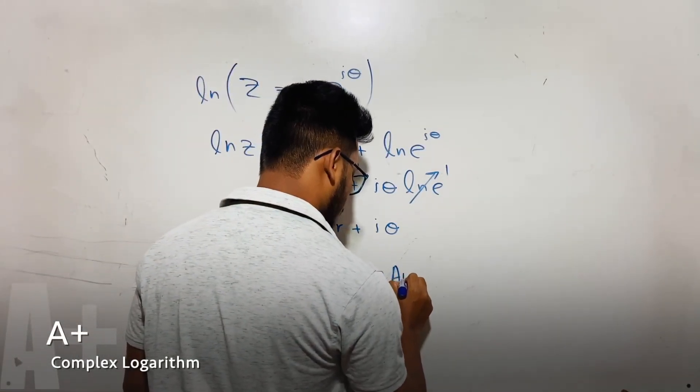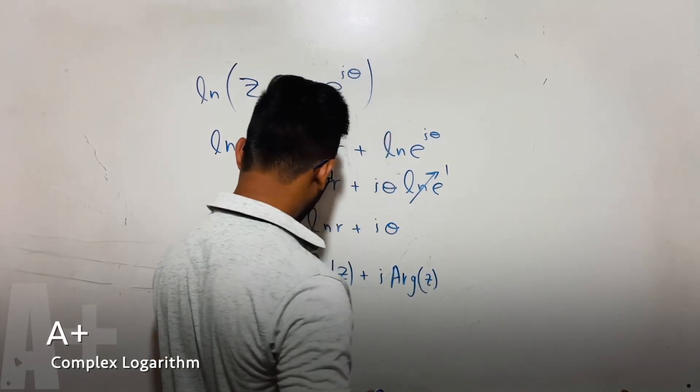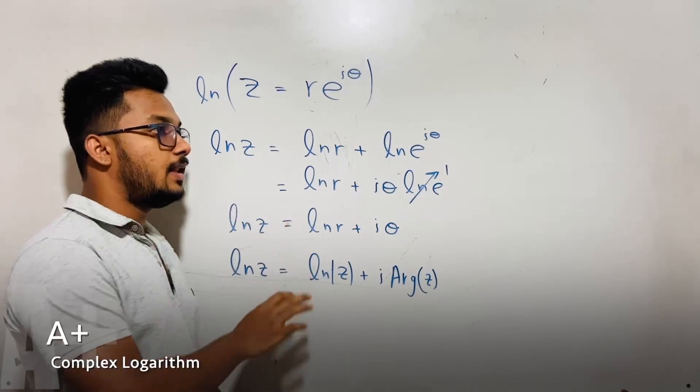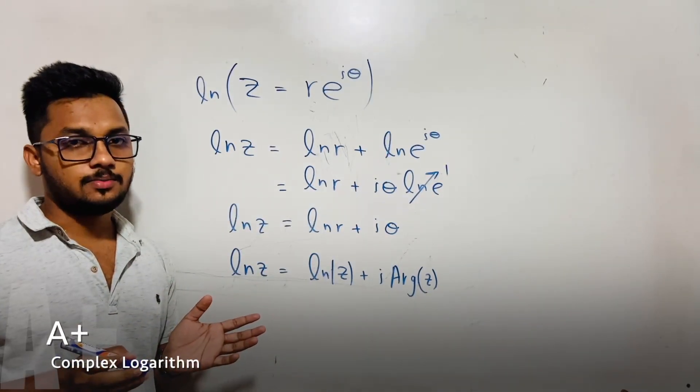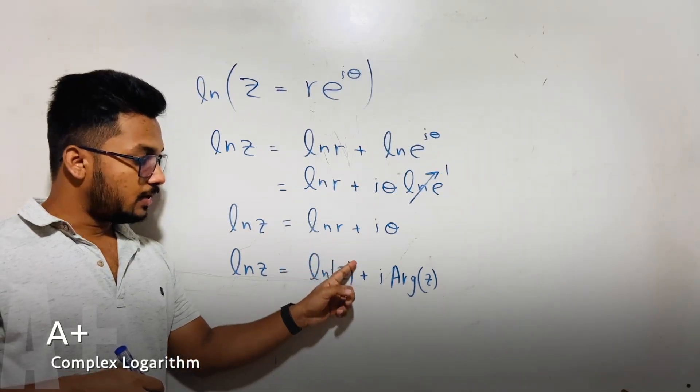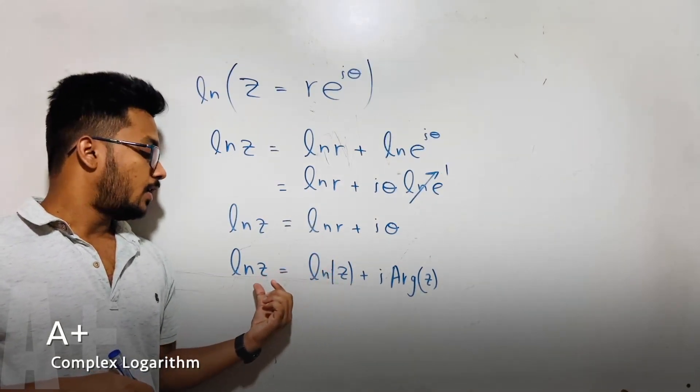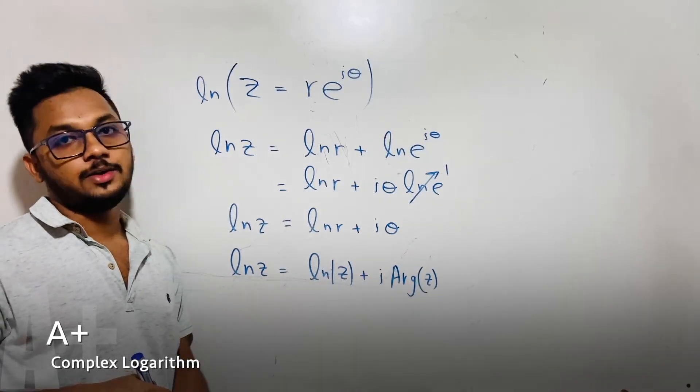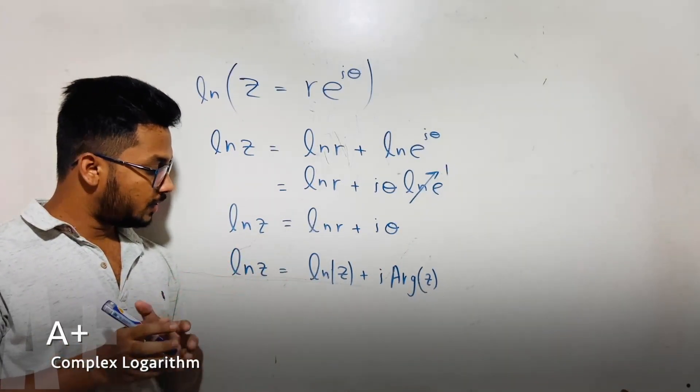So if we need to find the ln value of any complex number, what we need to do: first thing is we need to find the modulus of our complex number, second thing is the argument. So now I'm going to show you.